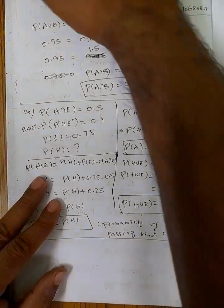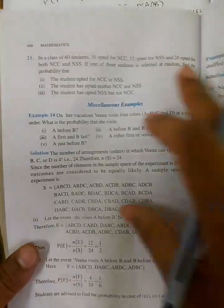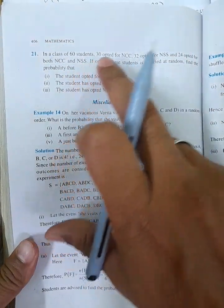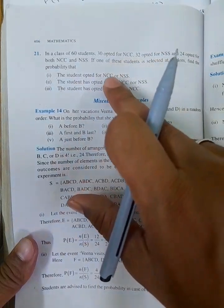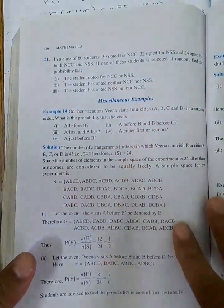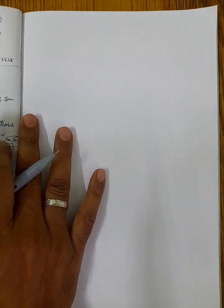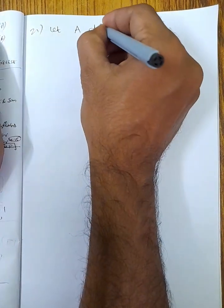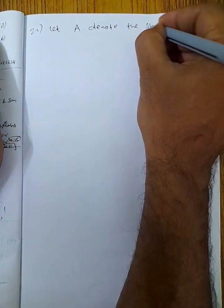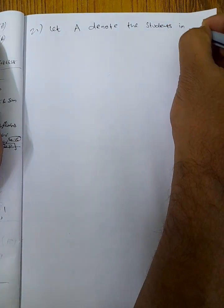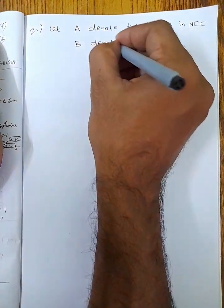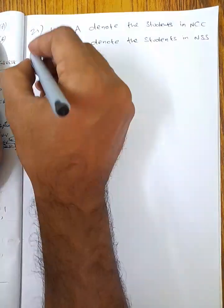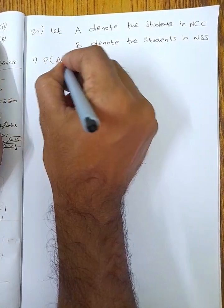Last, question 21: In a class of 60 students, 30 opted for NCC, 32 opted for NSS, and 24 opted for both NCC and NSS. A student is selected at random. Find: the probability of NCC or NSS, neither NCC nor NSS, and NSS but not NCC. Let A denote students in NCC and B denote students in NSS.